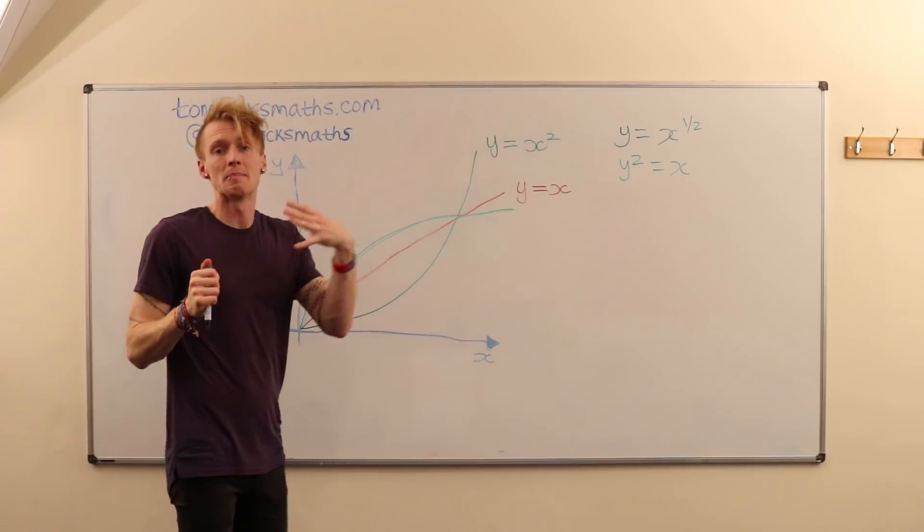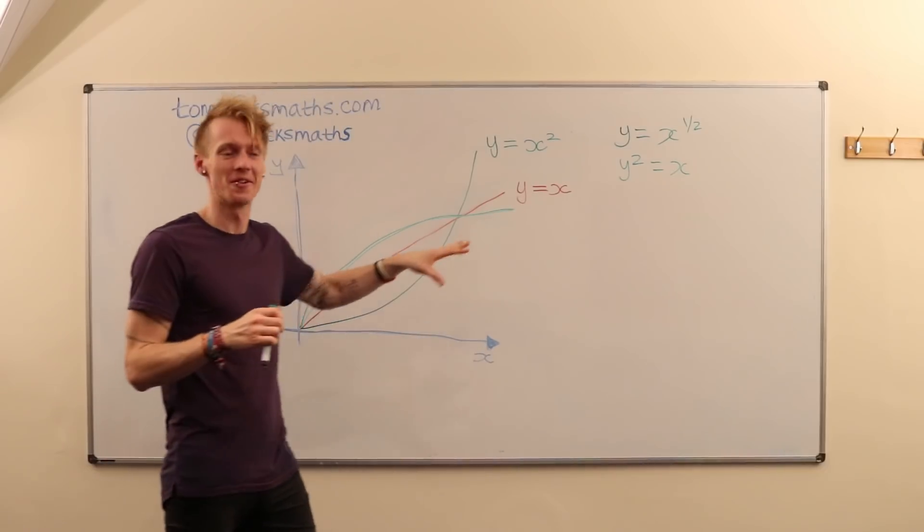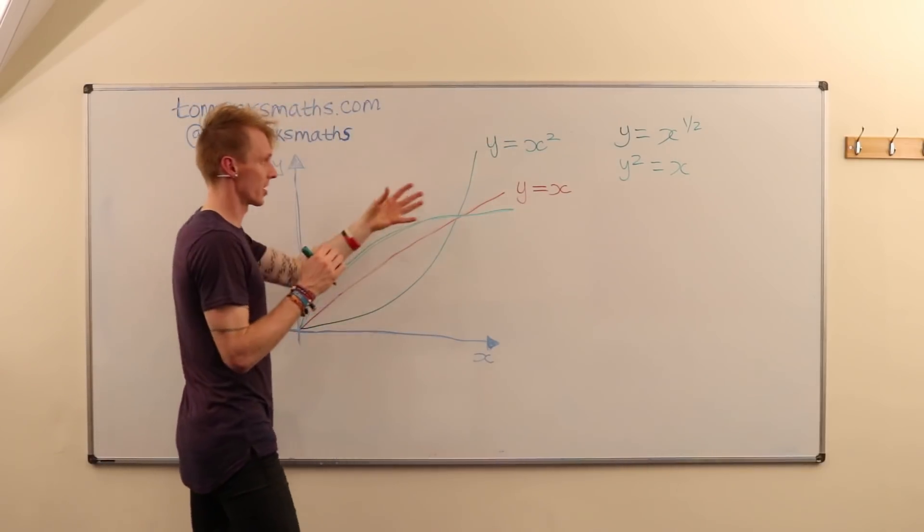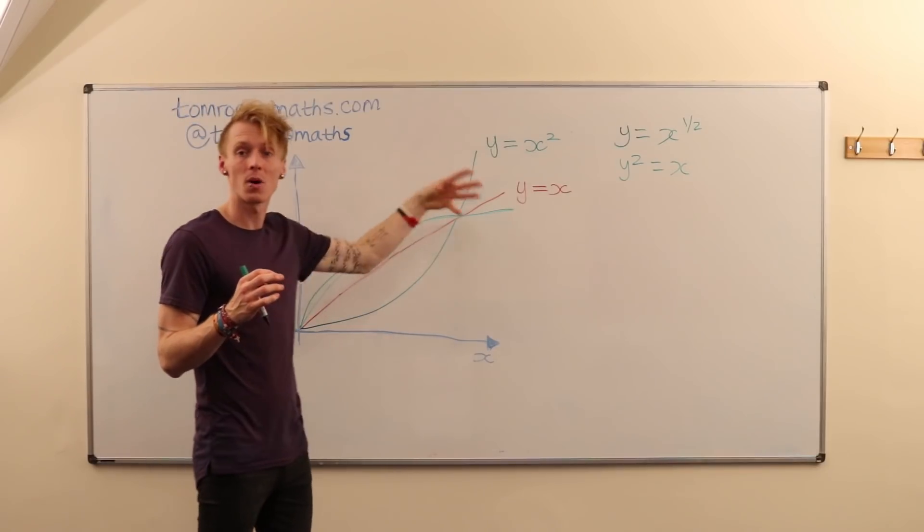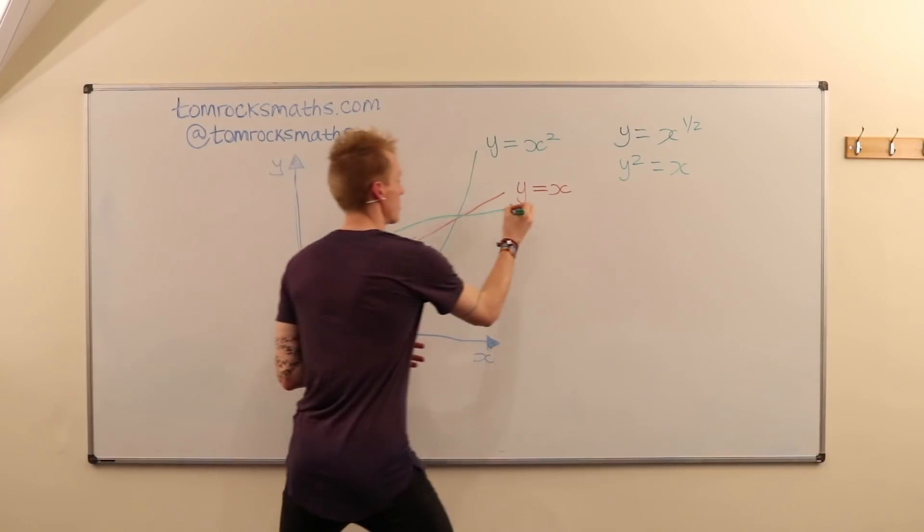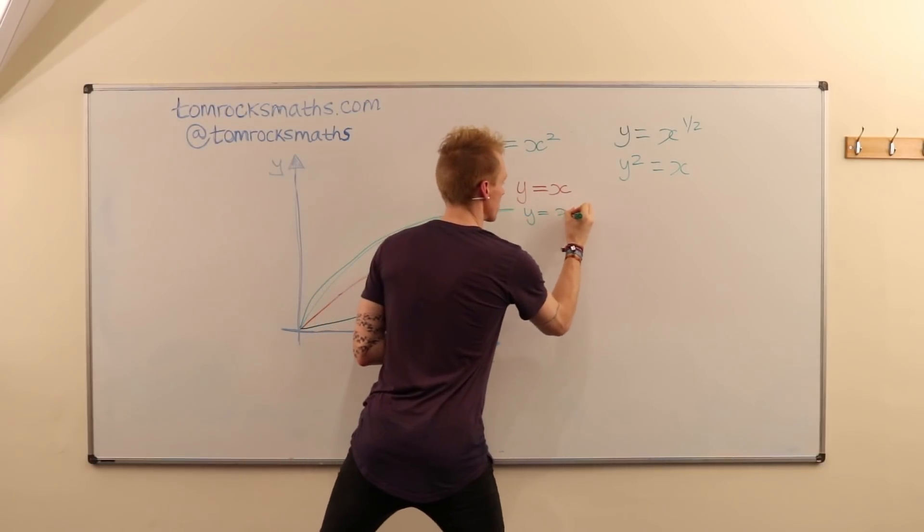So excuse the bad drawing, it's quite hard to do this on a whiteboard, but y equals x to the half is just going to be the reflection of y equals x squared in the line y equals x for the reasons that we've just shown. So this is y equals x to the half.